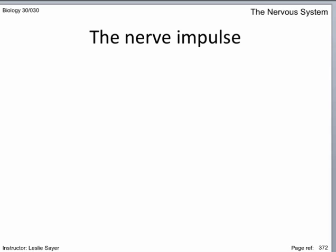The nerve impulse. Experiment on a frog leg using the redox reaction of two metals causes it to twitch, confirming the electrical nature of nerve tissue. Using a voltmeter, scientists measured the potential difference across the large axon membrane of a squid.